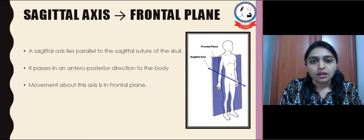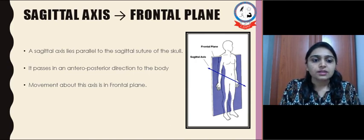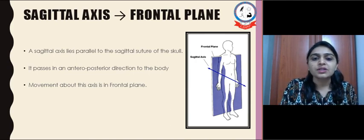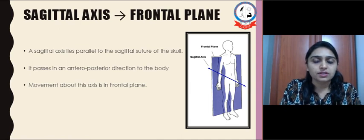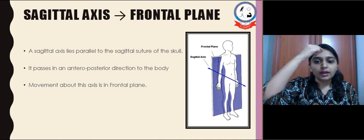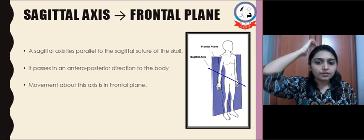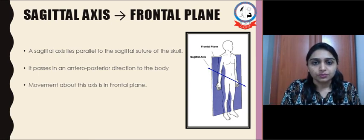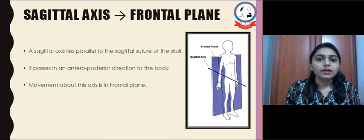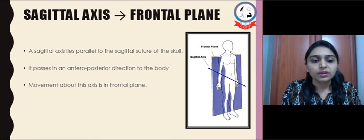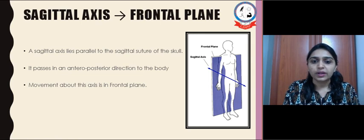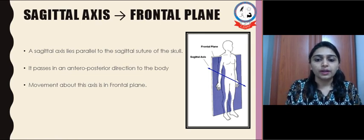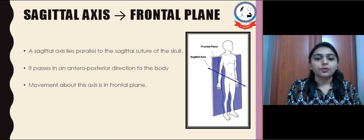The sagittal axis is named sagittal because it is parallel to the sagittal suture of the skull. It passes from anterior to posterior, parallel to that suture. The movement that occurs around this axis takes place in the frontal plane, and the frontal plane divides the body into an anterior half and a posterior half.